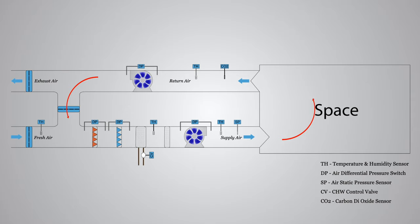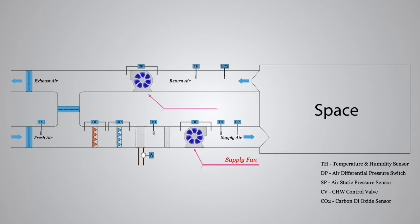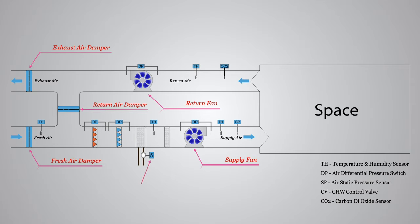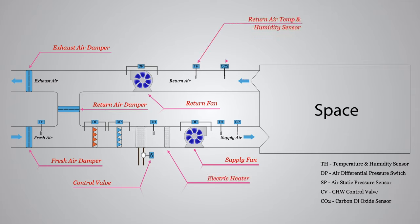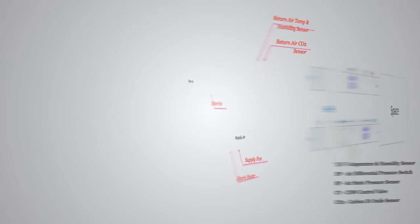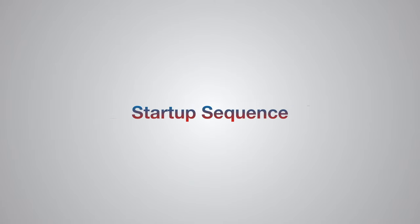This AHU is a recirculating unit with constant or single speed supply and return fans, with fresh air, return air, and exhaust air systems. The following sensors and devices are required as a minimum, which are monitored and controlled in the BMS: a fresh air damper with modulating actuator, an exhaust air damper with modulating actuator, a return air damper with modulating actuator, an electric heater, a return air temperature and humidity sensor, and a return air CO2 sensor. The remaining sensors are in place to monitor the system performance. Let's see how the startup sequence works for this AHU.